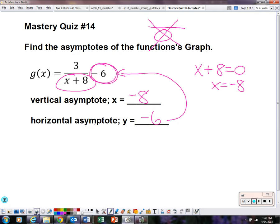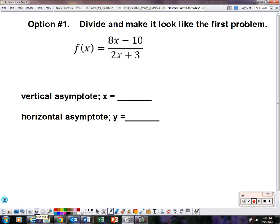The next problem looks a little bit different. You can find the vertical asymptote the same way as we did on the first problem. Take the denominator and set it equal to 0. Solve for x. So 2x equals negative 3. And divide by 2. So x equals negative 3 over 2. That is your vertical asymptote.